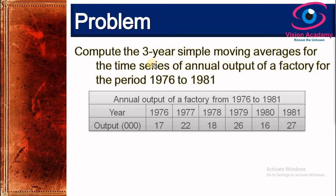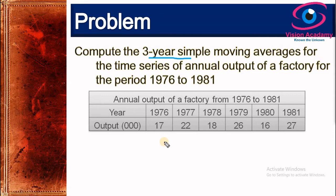Let us now solve a problem using simple moving average method. In this problem we need to compute three years simple moving averages for a given time series. The data is about the annual output of a factory from 1976 to 1981 — six periods with output values given for each period.